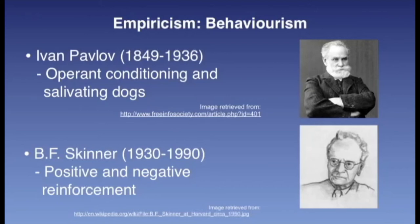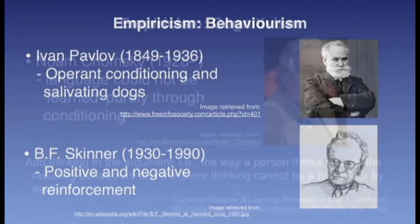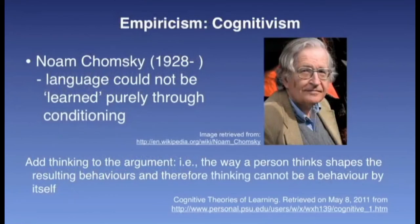Moving briefly to cognitivism, Noam Chomsky is an example of a cognitivist. He suggested that language could not be learned purely through conditioning. Cognitive theories arose, at least partially, as a response to the behaviorist's lack of attention to cognition or to thinking. Behaviorists identified thinking as a behavior, and therefore it was subject to reinforcement, as are all behaviors according to that theory. Cognitivists argued that the way a person thinks shapes the resulting behaviors, and therefore thinking cannot be a behavior by itself. The main issues of interest to cognitivists are the ways in which human thought works, and the processes of knowing.